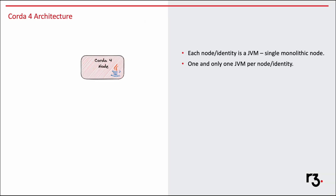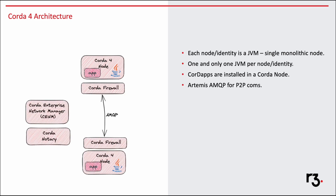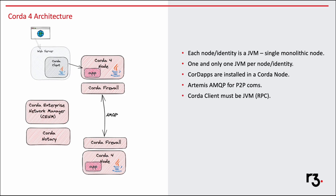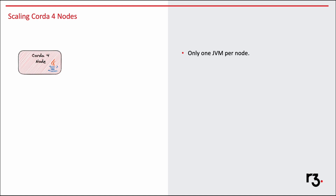In Coda 4, one node is one identity. It's a single JVM process and is a single monolithic node. Coda is installed on a node in Coda 4. AMQP is used for peer-to-peer communication. The Coda client has to be a JVM process if you want to integrate your current application with Coda. As one JVM is one node, in order to increase the throughput, you will have to have a bigger JVM.